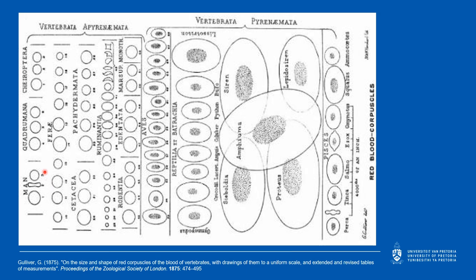Down here we have the Cetacea — whales and dolphins — next to the Pachydermata, which are the elephants. Underneath that is a whole line of red cells of various sizes and shapes from the ruminants, ranging from tiny little red cells up to red cells that display poikilocytosis. Also shown are red cells from rodents, marsupials, and monotremes. On the other side we have red blood cells from birds, reptiles, fish, and amphibians.